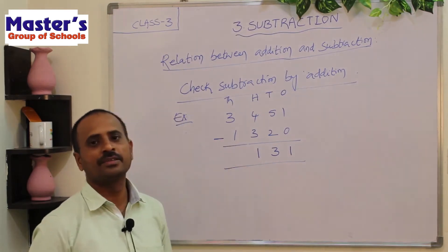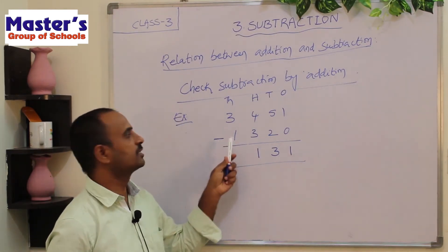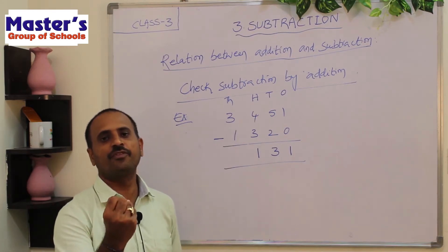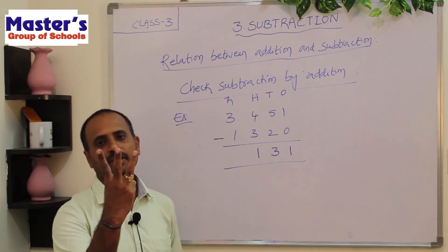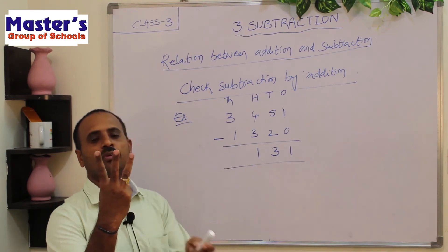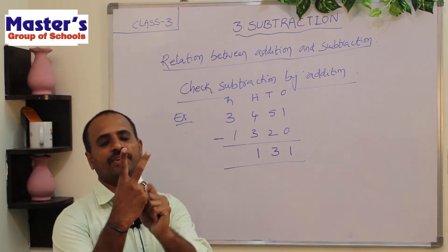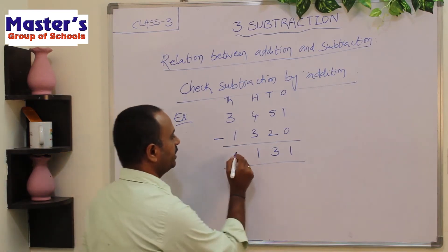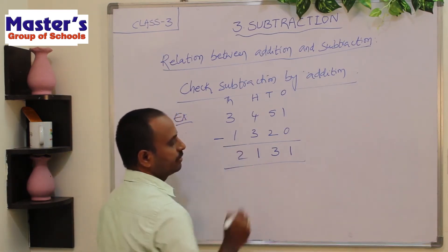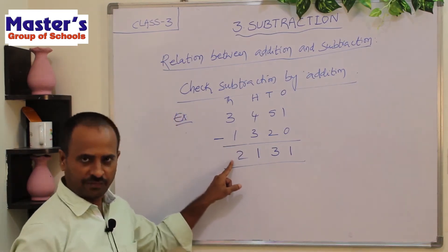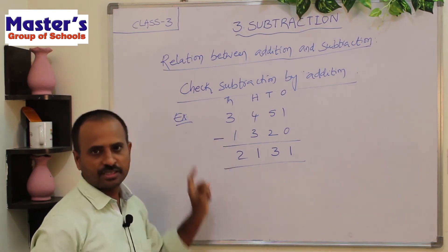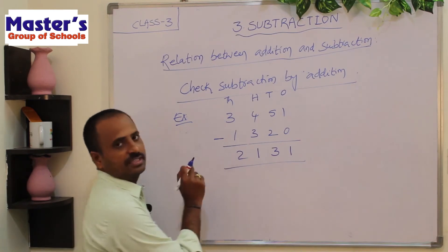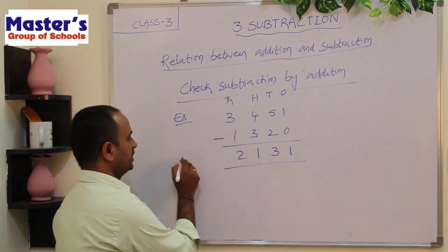Next go to thousands place. The digits are 3 and 1. Open 3 fingers, close 1 finger. There are remaining 2 fingers. Write 2. So this is the subtraction and the answer — the difference is 2131.